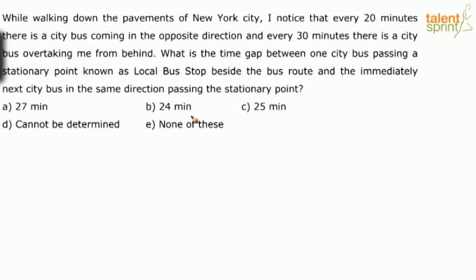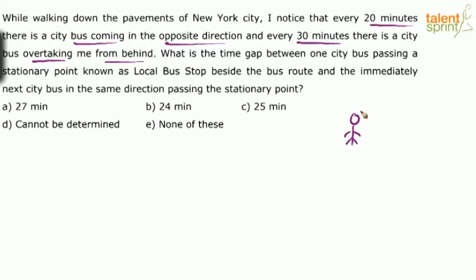Let us understand the question clearly. This is about a person who is walking on a road. He finds that every 20 minutes there is a city bus coming in the opposite direction, and every 30 minutes there is a city bus overtaking him from behind. So the man is walking in one direction, with buses coming from behind and buses coming in the opposite direction.